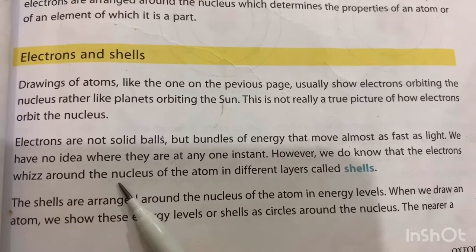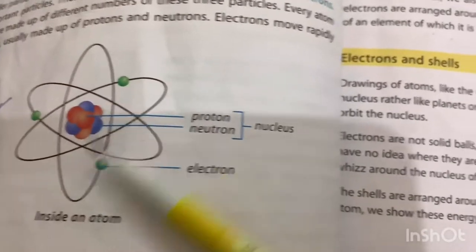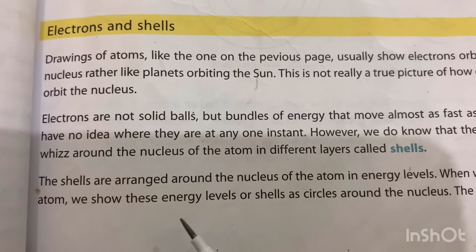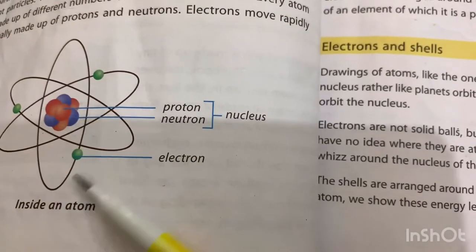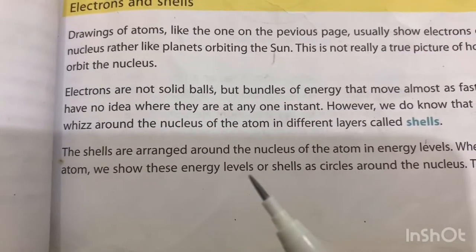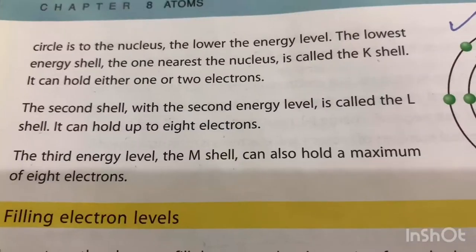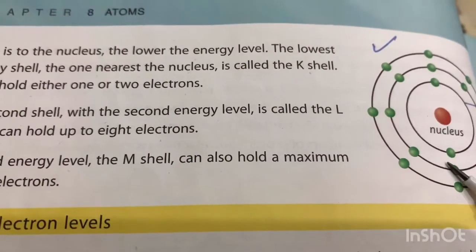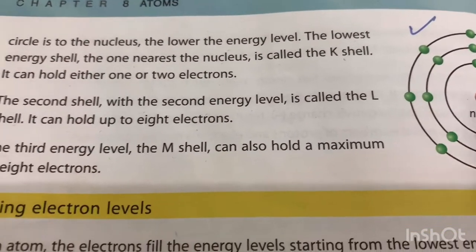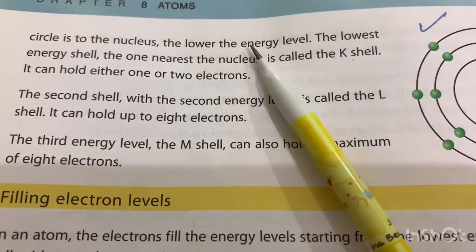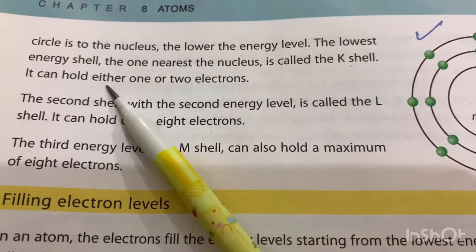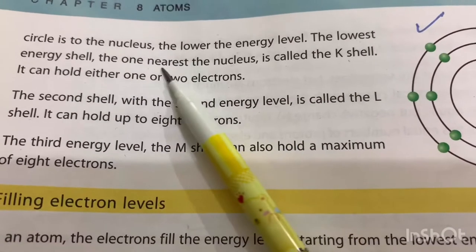We know that electrons are revolving around the nucleus of the atom in different layers called shells. The shells are arranged around the nucleus and we show these energy levels or shells as circles around the nucleus. The nearer the circle is to the nucleus, the lower the energy level. The lowest energy shell is the one nearest the nucleus.